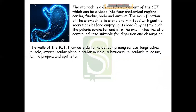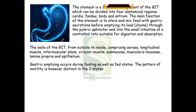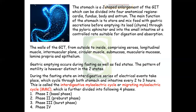The wall of the GIT from outside to inside consists of serosa, longitudinal muscle, intermuscular plane, circular muscle, submucosa, muscularis mucosa, lamina propria, and epithelium. Gastric emptying occurs during both fasting and fed states with different motility patterns. During the fasting state, an interdigestive series of electrical events cycles through both stomach and intestine every two to three hours, called the interdigestive myoelectric cycle or migrating myoelectric complex, denoted as MMC, which is divided into four phases.